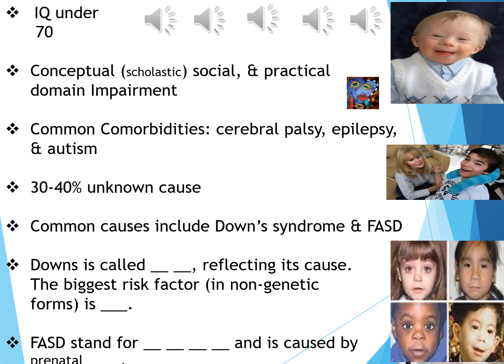There are common comorbidities — conditions occurring alongside the disorder — including cerebral palsy, epilepsy, and autism. With Intellectual Developmental Disorder, 30 to 40% of the time the cause is unknown, meaning 60 to 70% of the time the cause is known. The most common known causes include Down syndrome and FASD. Let's focus on Down syndrome first.